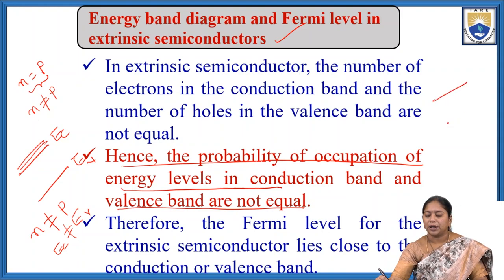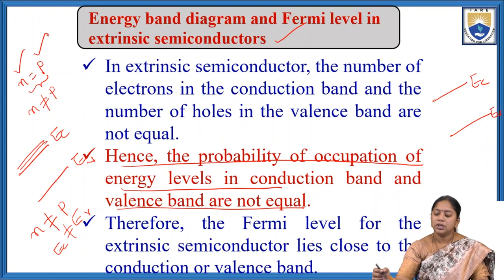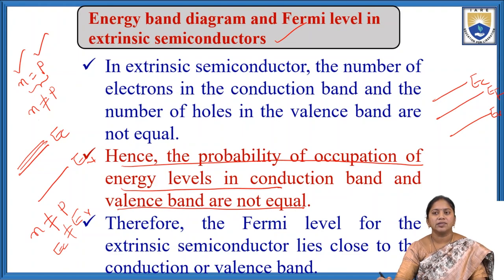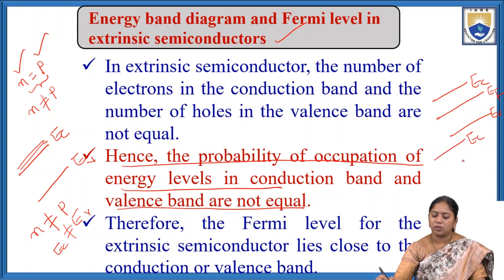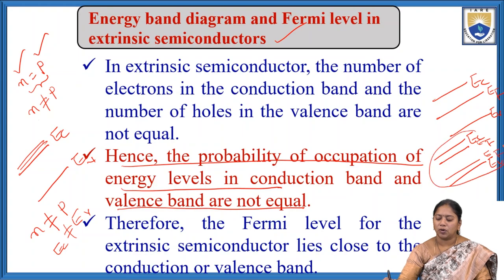For example, in intrinsic semiconductors, the number of electrons is equal to the number of holes, that is why the Fermi level lies in between the conduction band and valence band. Whereas in extrinsic semiconductors, the probability of occupation of energy levels in the conduction band and valence band are not equal. That is why the Fermi level is either close to the conduction band or close to the valence band — depending upon the type of semiconductor.